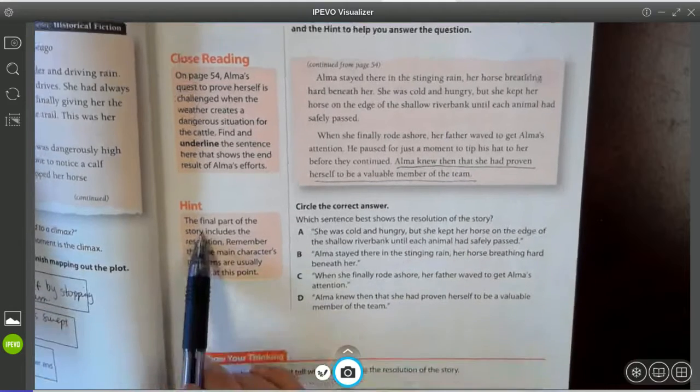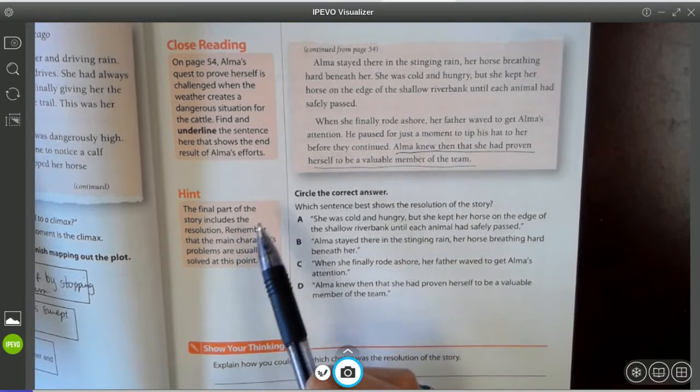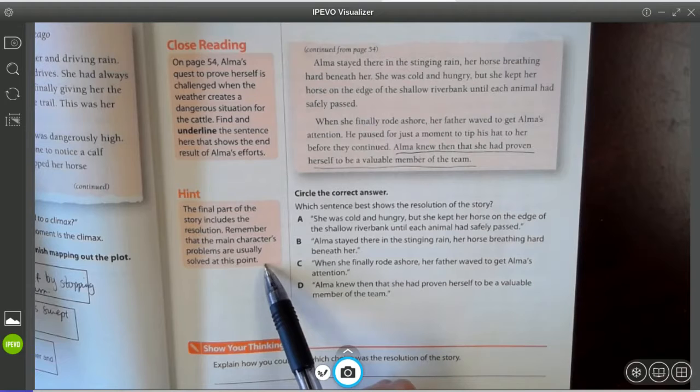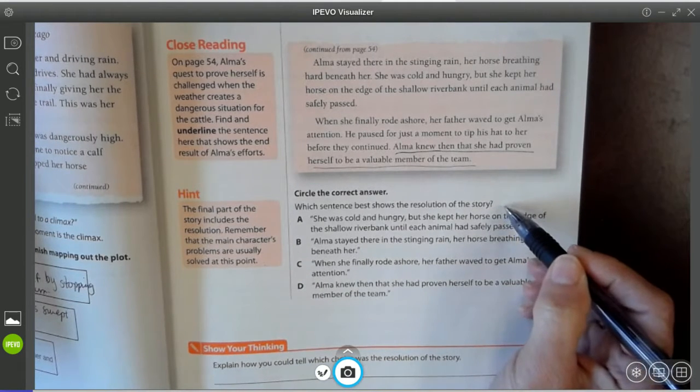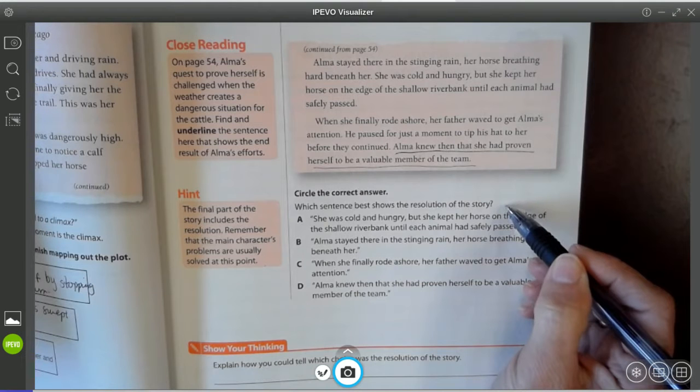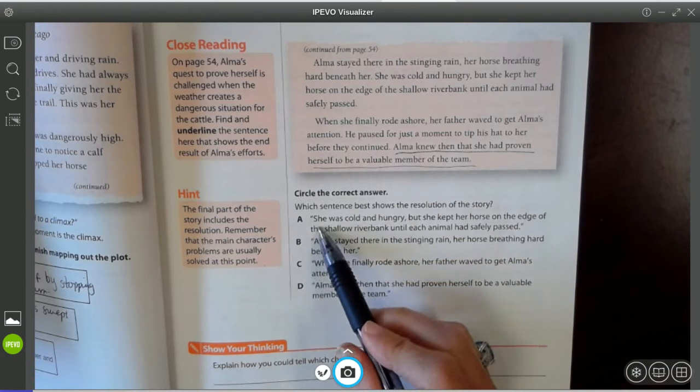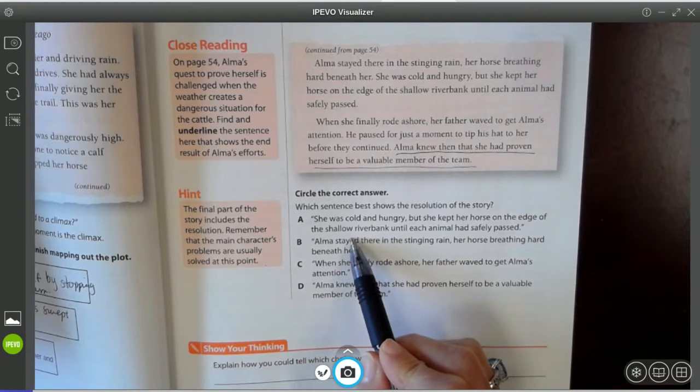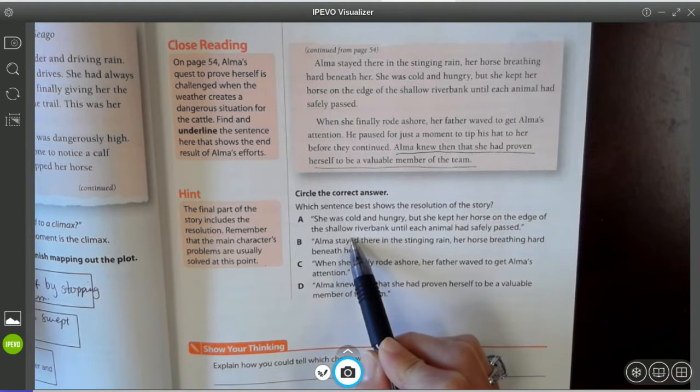So let's take a look at this hint. It says the final part of the story includes the resolution. This is our resolution. Remember that the main character's problems are usually solved at this point. Now, here's what the story. Here's what a question might sound like. Which sentence best shows the resolution of the story? All right. How it was resolved. A. She was cold and hungry, but she kept her horse on the edge of the shallow riverbank until each animal had safely passed.